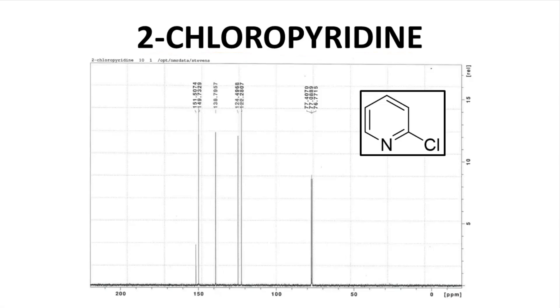Here we have the spectrum for 2-chloropyridine, which has five carbons. We do see five peaks in the spectrum, and all are within the 120 to 160 ppm window for aromatic ring carbons.